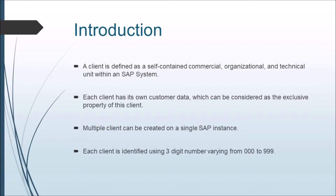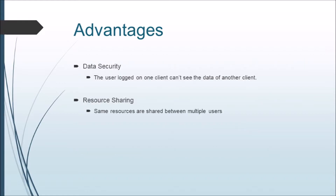Each client is identified by using three digit numbers, varying from 000 to 999. We have three default clients and the remaining 997 clients can be created. The major advantage of creating a client is data security — the user logged on one client will not be able to see the data of another client. We can also share resources between multiple users.